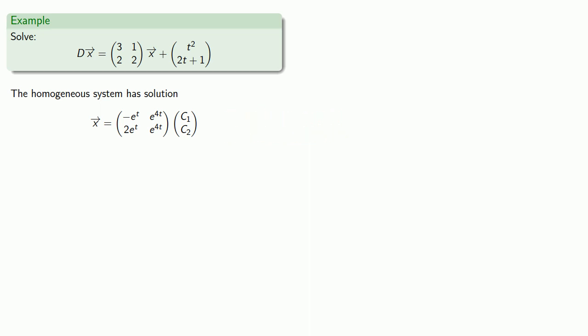So, we'll use variation of parameters, and we'll suppose that we have a solution of the form almost the same thing, but instead of constants C1 and C2, we'll have functions of t, C1 and C2.